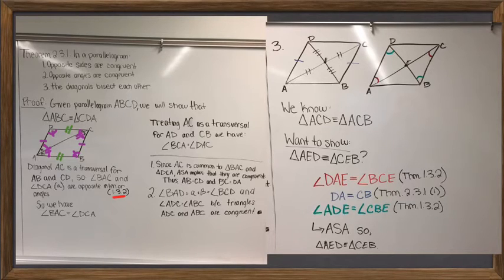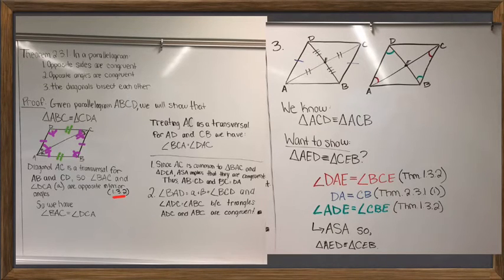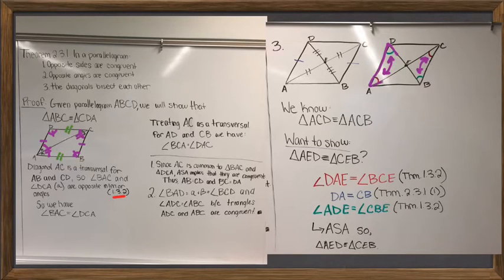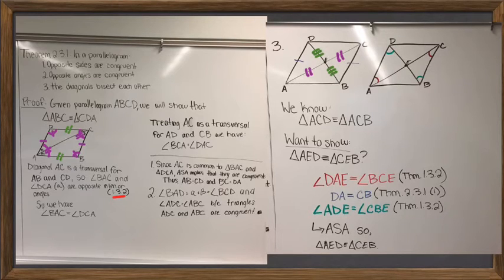The big finish is showing that the diagonals of a parallelogram bisect one another. We discovered a second congruency: triangles AED and CBE are congruent, again by the ASA criterion, using the opposite interior angles theorem 1.3.2 to justify the angle congruencies, and then Theorem 2.3.1 — the opposite sides result we just proved — to justify the included side. As a result, the lengths in the middle, the lengths of these diagonals, are exactly the corresponding sides of those congruent triangles, and therefore the diagonals bisect one another.